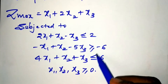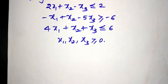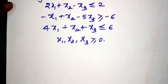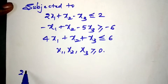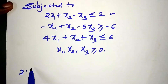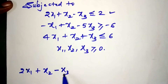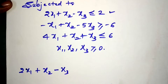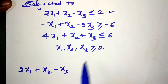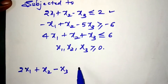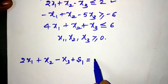So let us convert the constraints into equations. Taking the first constraint: 2x1 plus x2 minus x3 is less than or equal to 2. Whenever we have an inequality sign of less than or equal to, we need to add a slack variable s1 and make it an equation equal to 2.